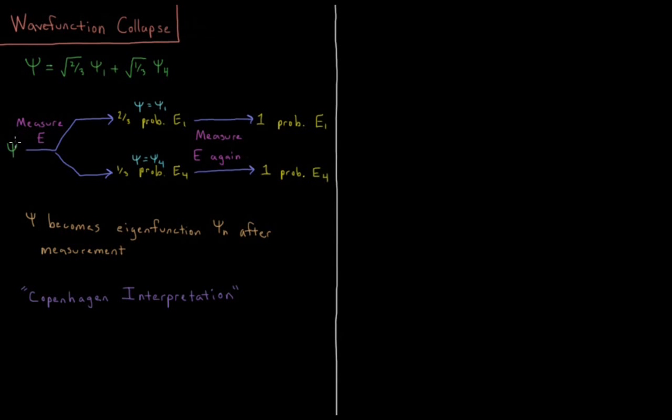So if I have my psi, my system is in this state, I measure the energy. What I'm going to get is a 2 thirds probability that I measure the energy of psi 1 and a 1 third probability of measuring the energy of the fourth eigenfunction.